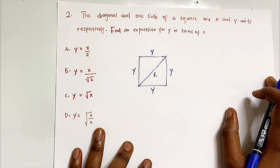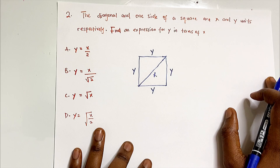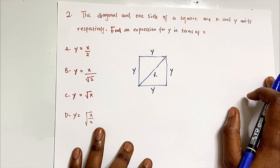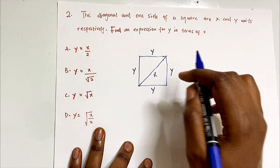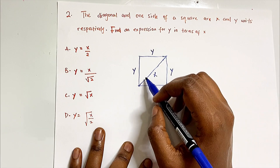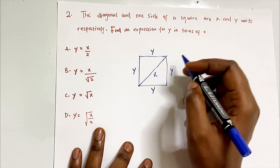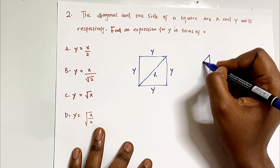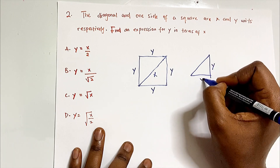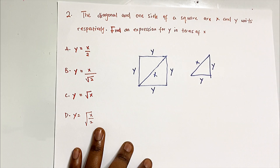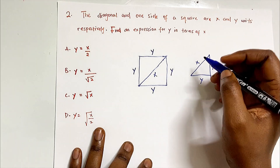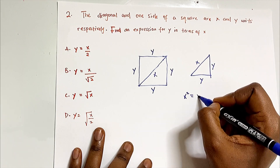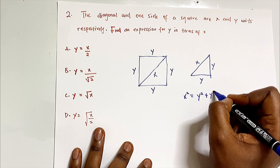We need to find a relationship between y and x, so y should equal something related to x. If I extract the right-angle triangle formed by the diagonal, I have two legs of length y and a hypotenuse of x. By Pythagoras' theorem: x² = y² + y².